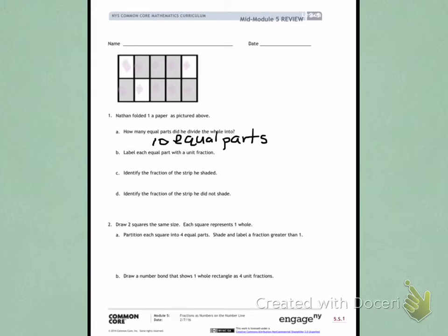Letter B. Label each equal part as a unit fraction. So I have to imagine that only one portion is shaded, and there are 10 equal parts, giving me a unit fraction of 1 tenth. I will label each fraction in the box as 1 tenth. So I'm done with A and B.